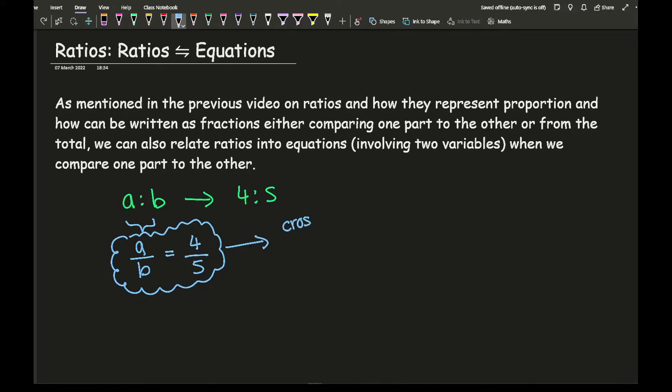So if I cross multiply, multiplying this with this and this with this, then what I end up with is 5a equals 4b. From this, I can create a formula or an equation. Making a the subject, I get a equals 4 over 5b.